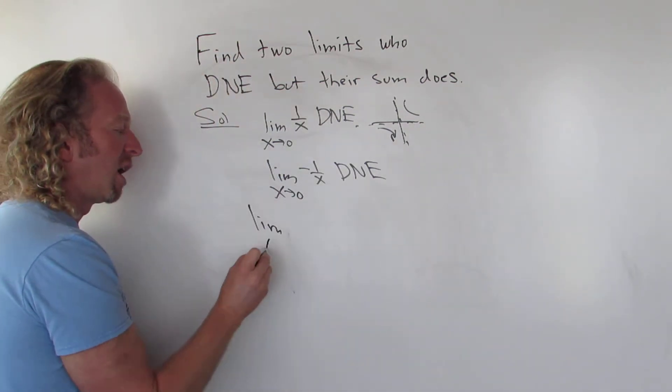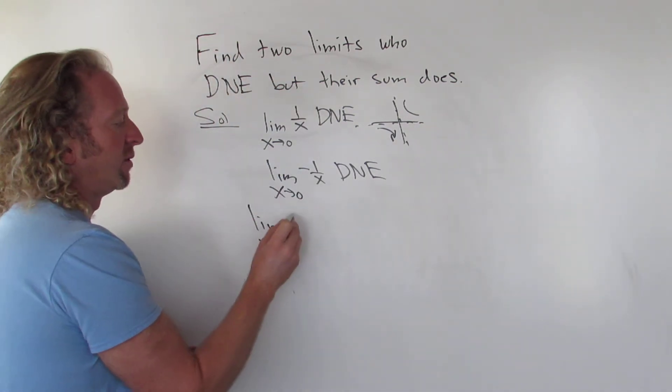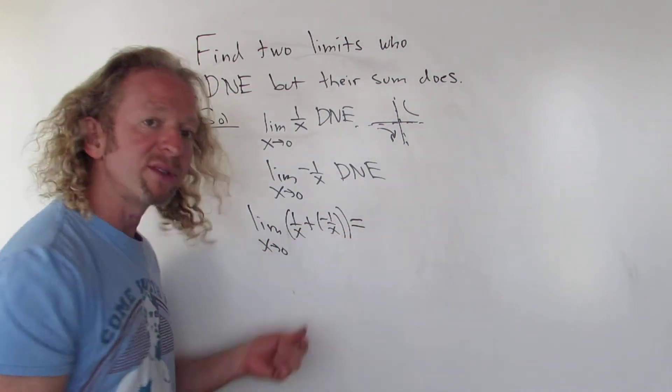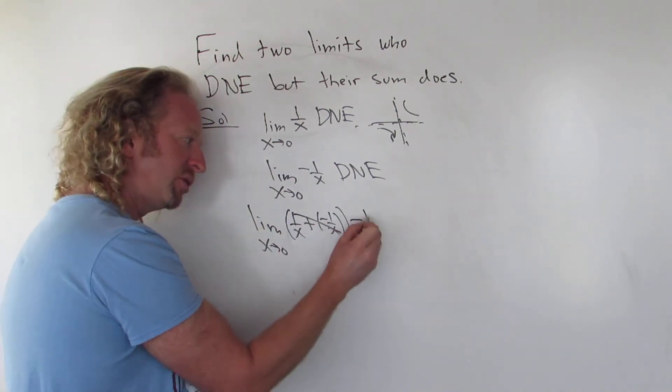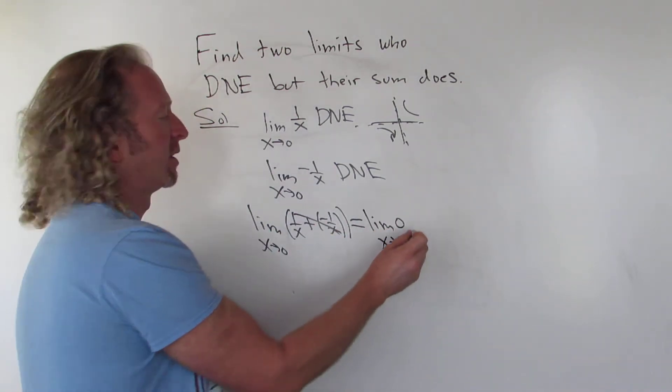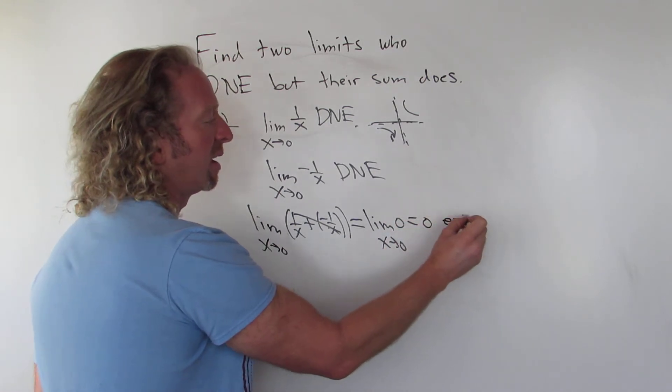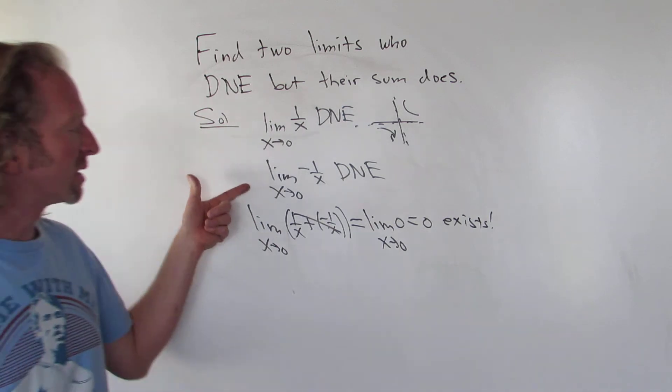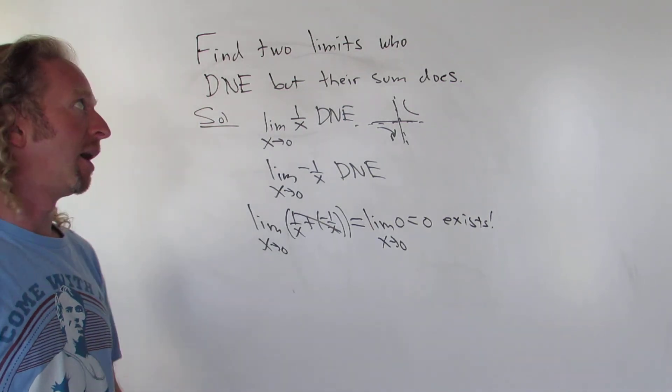If you take the limit of the sum, so if you do 1 over x plus negative 1 over x, what happens is these cancel. So you get the limit as x approaches 0 of 0, and that's just going to be 0. So this does exist because it's equal to a number. So this is an example of two limits that do not exist whose sum actually does exist.